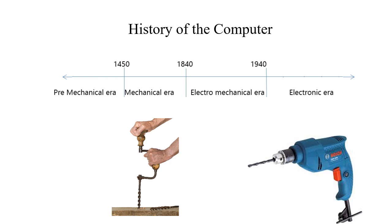In the electronic era, our work became easier due to the use of electricity. It took time to come from the mechanical era to the electronic era, and that period was called the electromechanical era, combining the names of both eras. The period before the mechanical era is called the pre-mechanical era. Therefore, computer history can be divided into four eras: the pre-mechanical era, the mechanical era, the electromechanical era, and the electronic era. The era we live in today is called the electronic era.